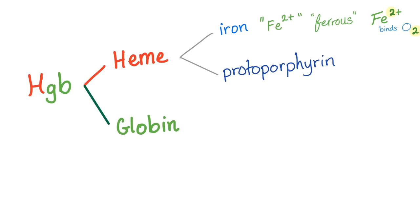As you know, hemoglobin is heme and globin. Heme means iron — not necessarily blood. Heme is iron and protoporphyrin. What kind of iron? The ferrous, Fe2+. Fe2+ binds O2. Only the ferrous can bind oxygen. Fe3+, the ferric, cannot bind oxygen. And this is the problem in methemoglobinemia.